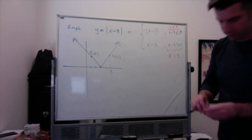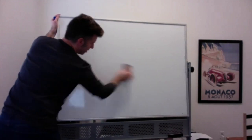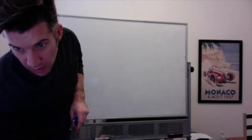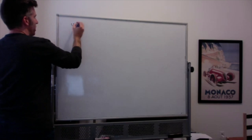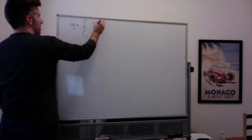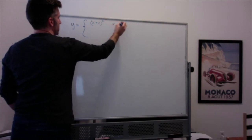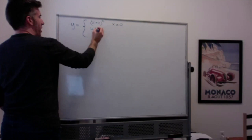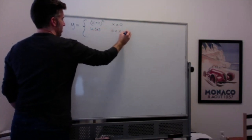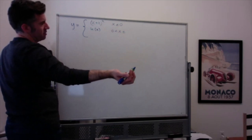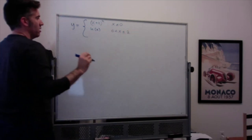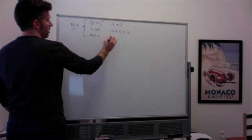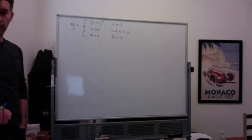Now let's do the vertical asymptotes example. Let's graph this piecewise function: y equals x plus two squared when x is less than or equal to zero; y equals the natural log of x when x is greater than zero and less than or equal to two; and y equals x minus four when x is greater than two.